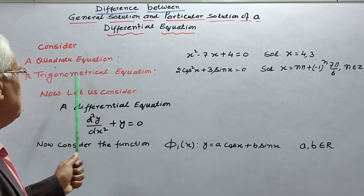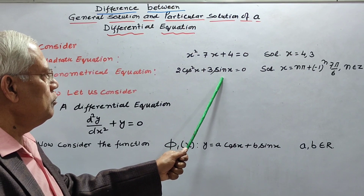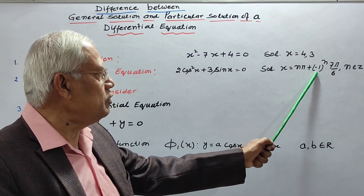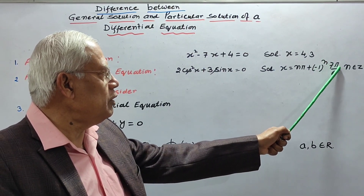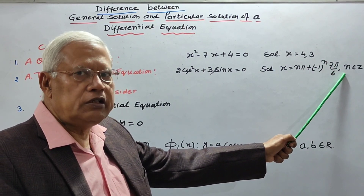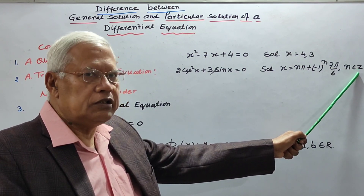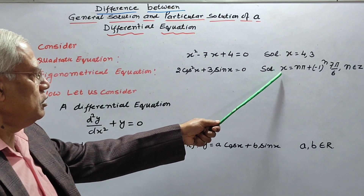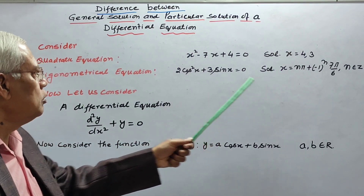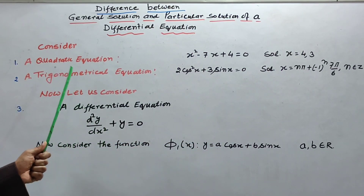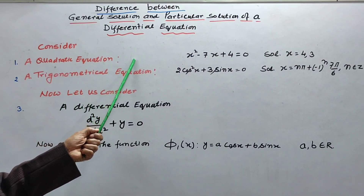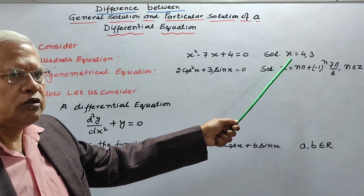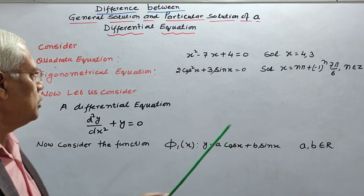Similarly, if we solve a trigonometrical equation, you will get its solution x equal to nπ ± (−1)ⁿ · 7π/6, where n is an integer. This is also a number. However, x is an angle, but an angle is also a number. So, solutions of any algebraic or trigonometrical equations are simply numbers or angles, which are also numbers.